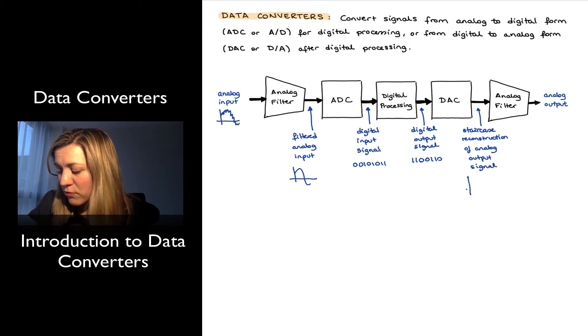We're going to see that the reason why it is a staircase reconstruction is due to the quantization that occurs during the sampling process and digitization process. So that staircase needs to be run through another filter at the output.